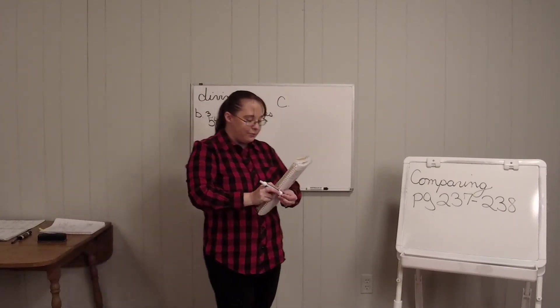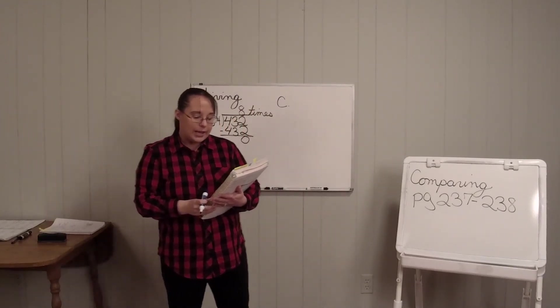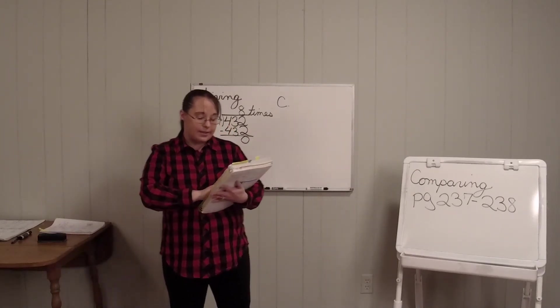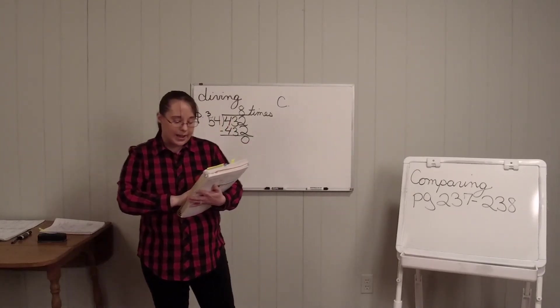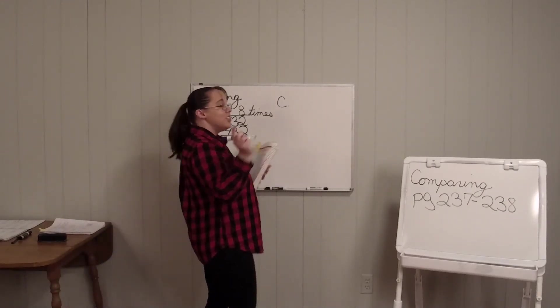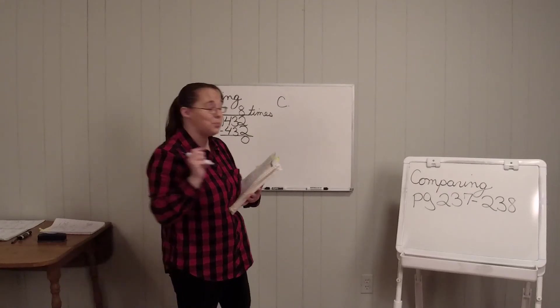Let's look at C. James weighed 4 kilograms when he was born. He now weighs 48 kilograms. How many times as heavy is he now as when he was born? Just divide those two numbers. This should be an easy division problem for you.